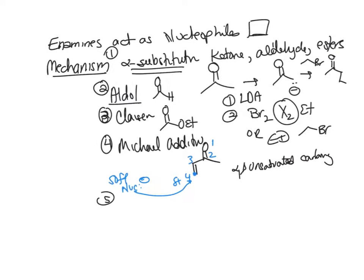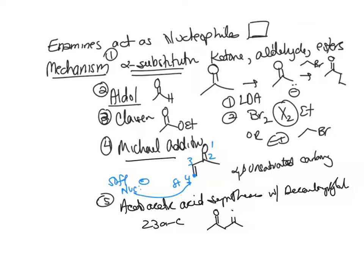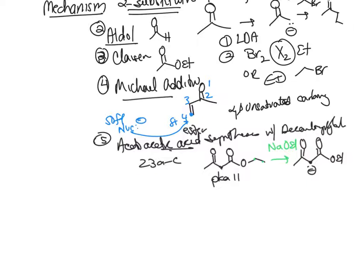The fifth reaction we've talked about is acetoacetic acid synthesis with decarboxylation. These were all in your Pogel 23a through c. Here's your acetoacetic acid - of course this is an ester here, and we react this with sodium ethoxide because there's your ester. We make the enolate there at that carbon. The pKa here is I want to say 11 - you can check me on that. And then you can react that with an alkyl halide.